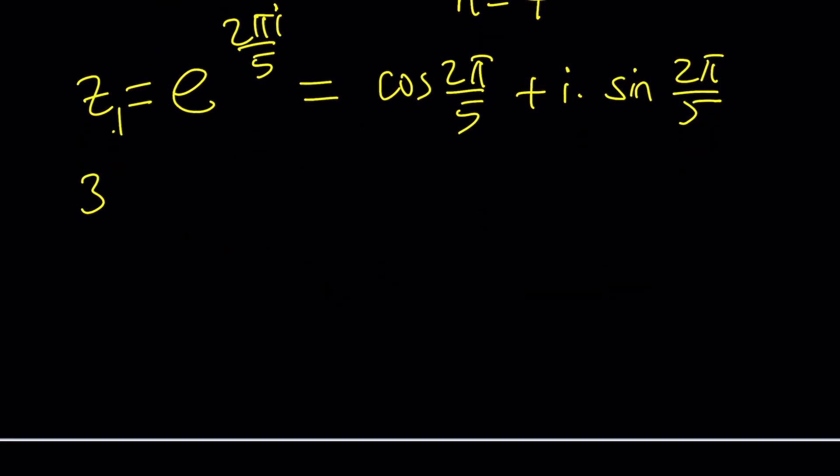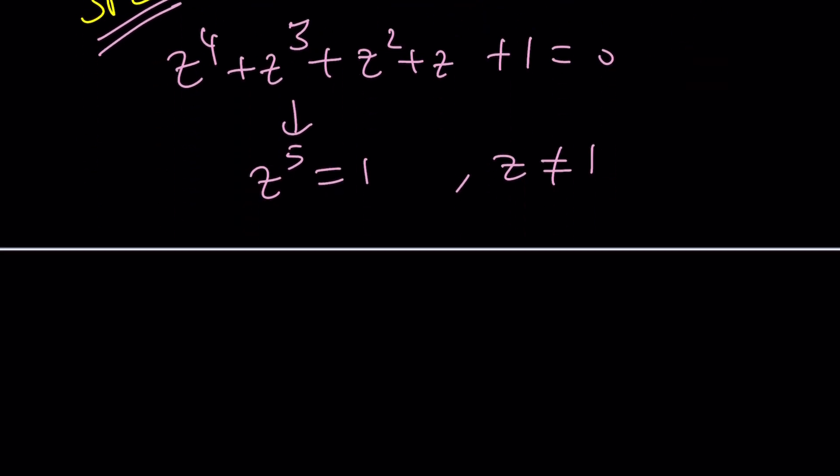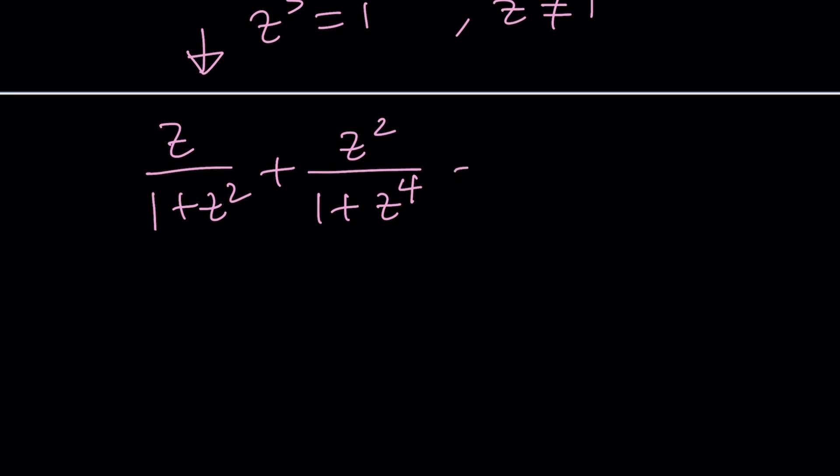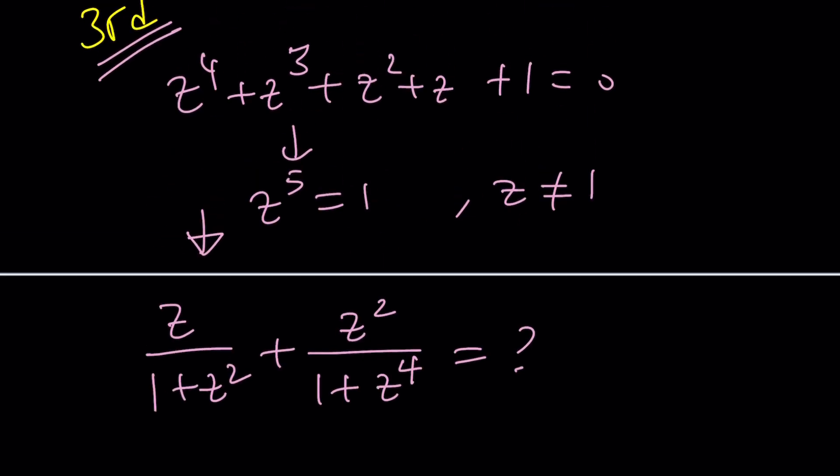Then what you can do with that is substitute it into our expression and find the result from there. But I have a better idea, which is called the third method, save the best for last. One more time, we have z to the fourth plus z to the third plus z squared plus z plus 1 equals 0, which implied z to the fifth equals 1, along with the condition that z does not equal 1. Notice that even with the second method, you still have to substitute that trigonometric beast, like cosine of 2 pi over 5, into this equation. That's really time-consuming, but I have a better idea.